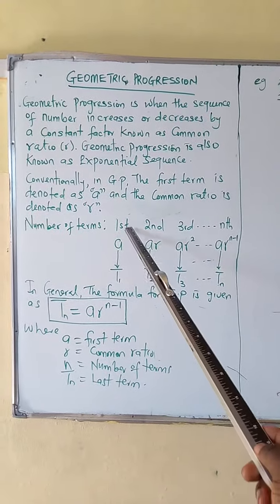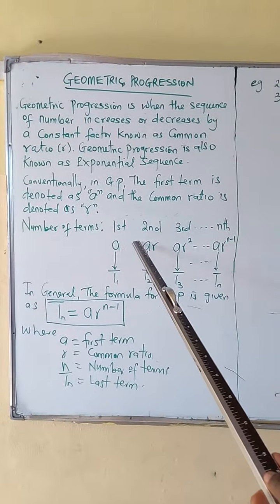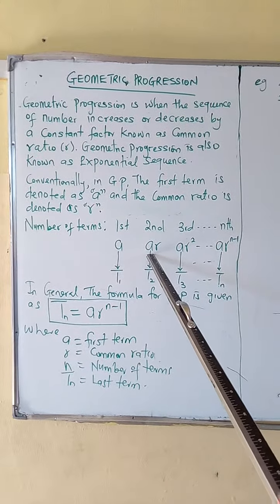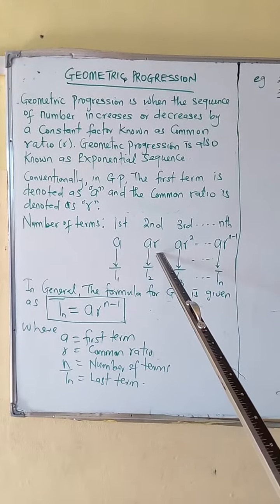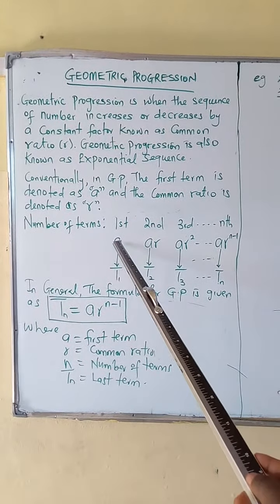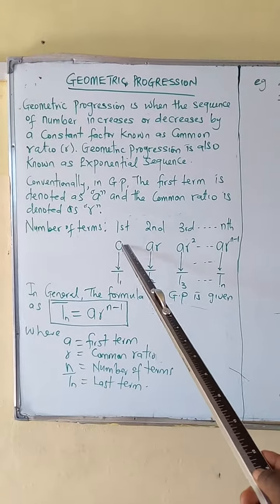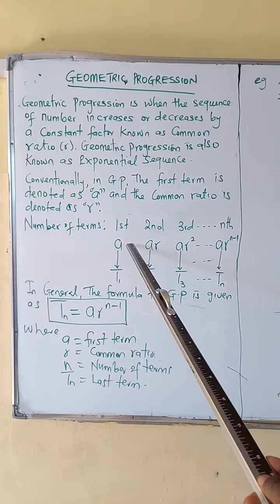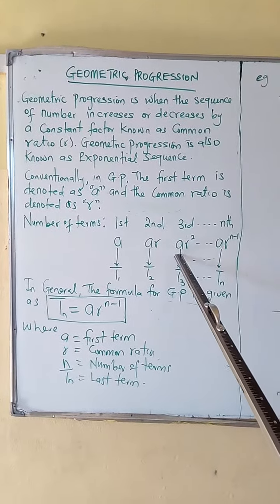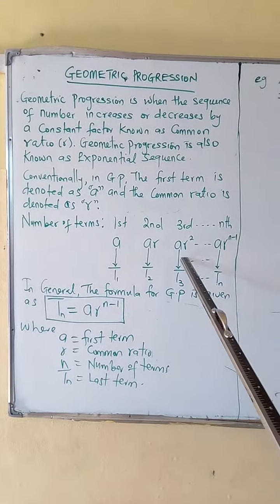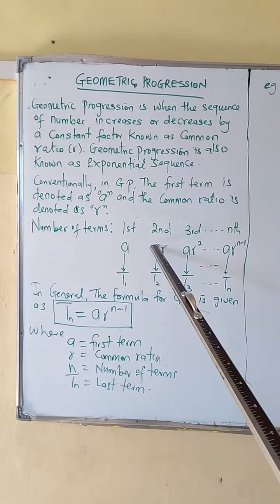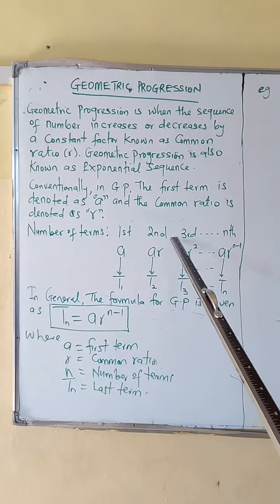Our first term will be A. Our second term will be AR, which is obtained by multiplying the first term with the common ratio. Our third term will be AR squared, obtained by multiplying the second term with the common ratio.